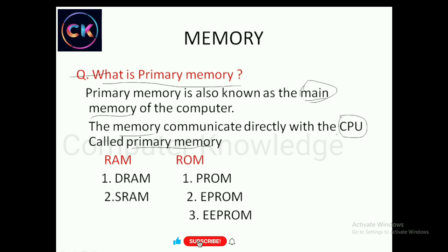The CPU has direct contact with the main memory. Next, primary memory has two types: one is RAM and one is ROM. RAM is Random Access Memory. ROM is Read Only Memory.